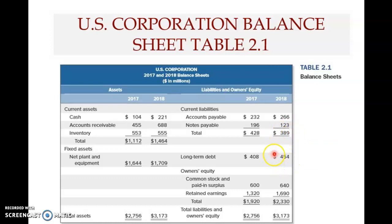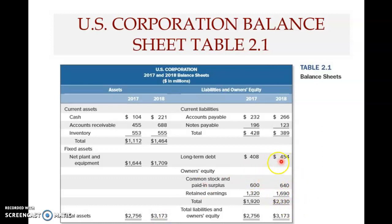When you add total current liabilities with long-term debt, that gives you total liabilities. When you add total liabilities with total owners equity, you get total liabilities and owners equity, which must equal total assets. This equation is crucial: total assets must always equal total liabilities plus equity, because the purchase of assets must be funded by funds provided by both liabilities and equity.